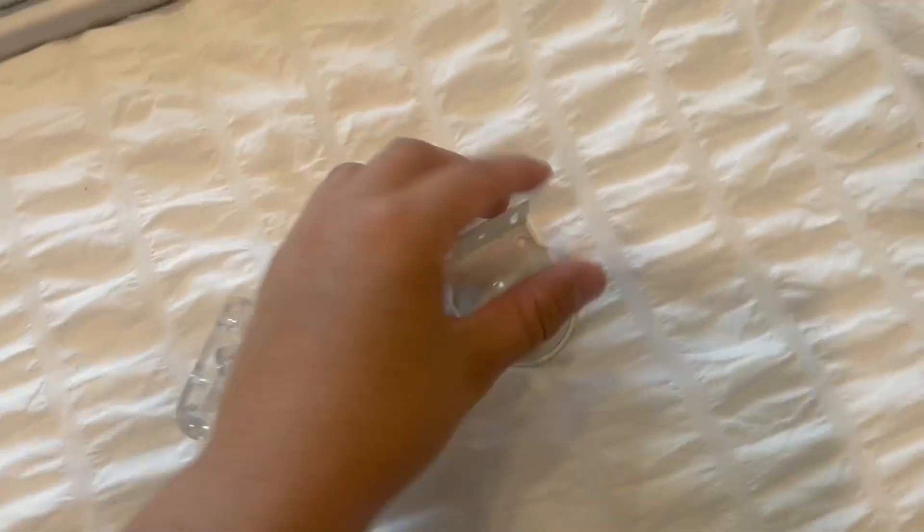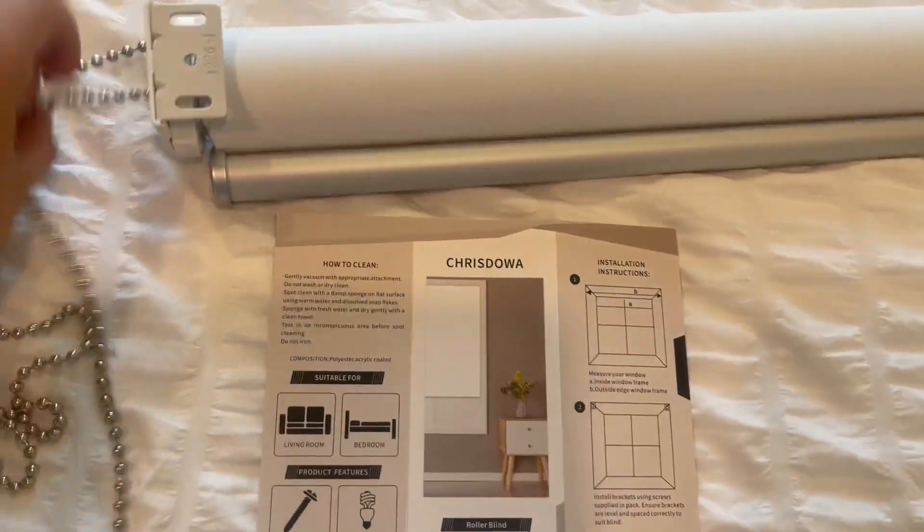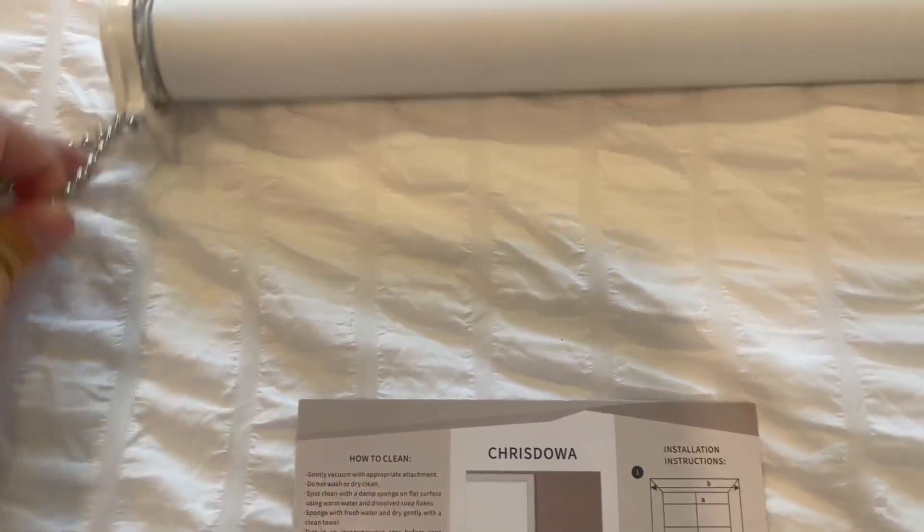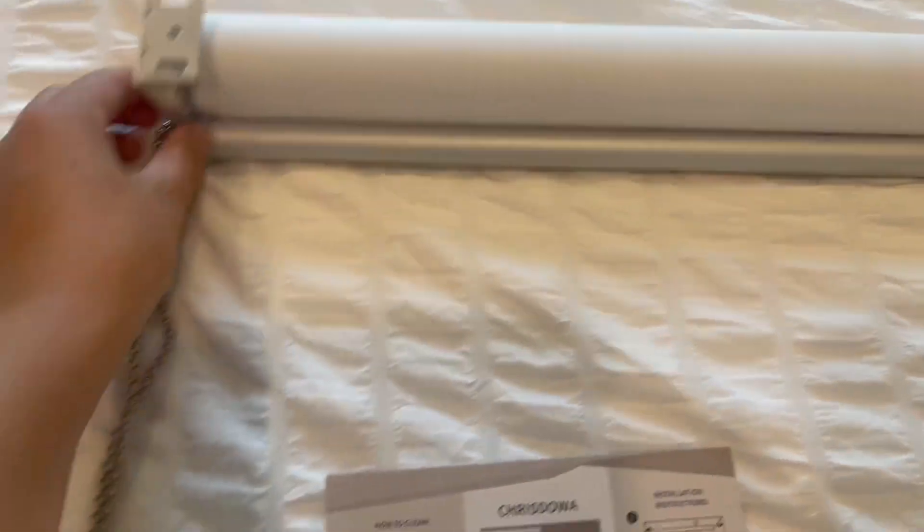And then these are your brackets. So this bracket will go onto this side with that little peg there. And then this is like your gear one. So as you pull it, it will release this. And then as you pull it back up, it will pull it right back up.